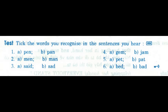Test. Tick the words you recognize in the sentences you hear. 1. I've bought a new pan. 2. Did you see the men? 3. He is sad to live alone. 4. That's a very expensive jam. 5. Don't pet the dog. 6. These are bedclothes.